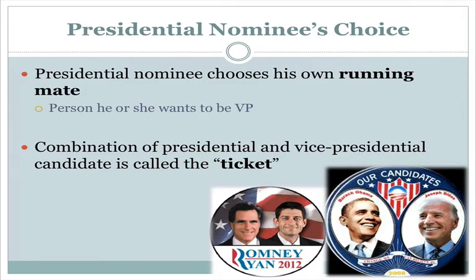At the national convention, the presidential nominee is going to choose his or her running mate — the person he or she wants to be vice president. The person who is nominated gets to pick their own running mate, and together they create what's called a ticket. When voters go into the voting booth and cast their vote, they are voting for basically a package deal — if you vote for the Republican, you're voting for that person and their running mate; if you vote for the Democratic side, the same thing.